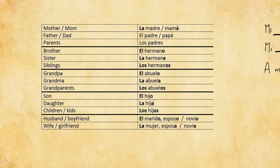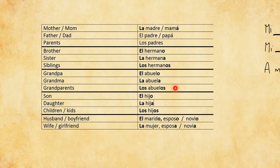Let me run through these once more quickly: mother/mom — 'la madre', 'la mamá'; father/dad — 'el padre', 'el papá'; parents — 'los padres'; brother — 'el hermano'; sister — 'la hermana'; siblings — 'los hermanos'; grandpa — 'el abuelo'; grandma — 'la abuela'; grandparents — 'los abuelos'; son — 'el hijo'; daughter — 'la hija'; children/kids — 'los hijos'; husband — 'el marido' or 'el esposo'; boyfriend — 'el novio'; wife — 'la mujer' or 'la esposa'; girlfriend — 'la novia'.